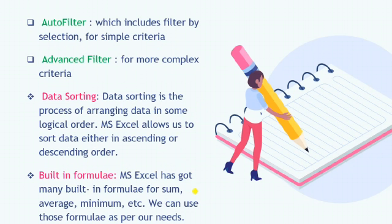The first type is Auto Filter, which filters by selection — you can select any area or range of cells and apply the auto filter. For more complex criteria, if the calculations are very complex, you can apply the Advanced Filter. Next, we have Data Sorting. It is the process of arranging data in some logical order — either descending or ascending, A to Z or Z to A. These are all the formats available in data sorting.